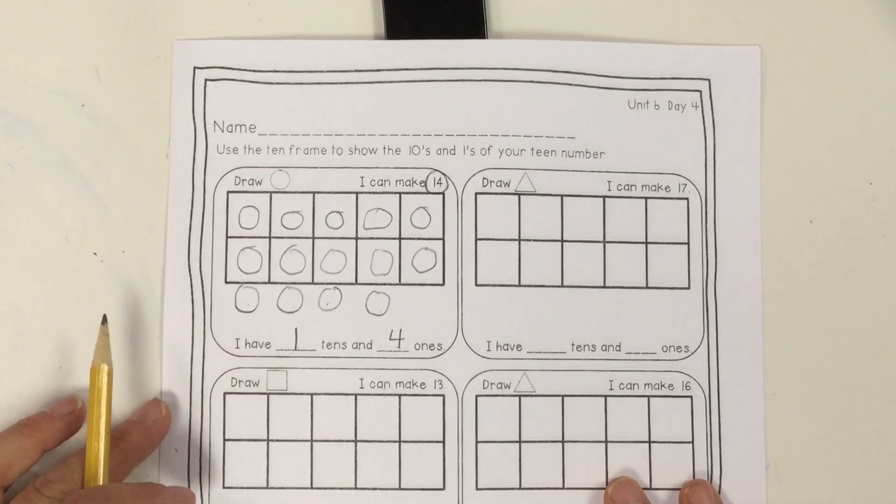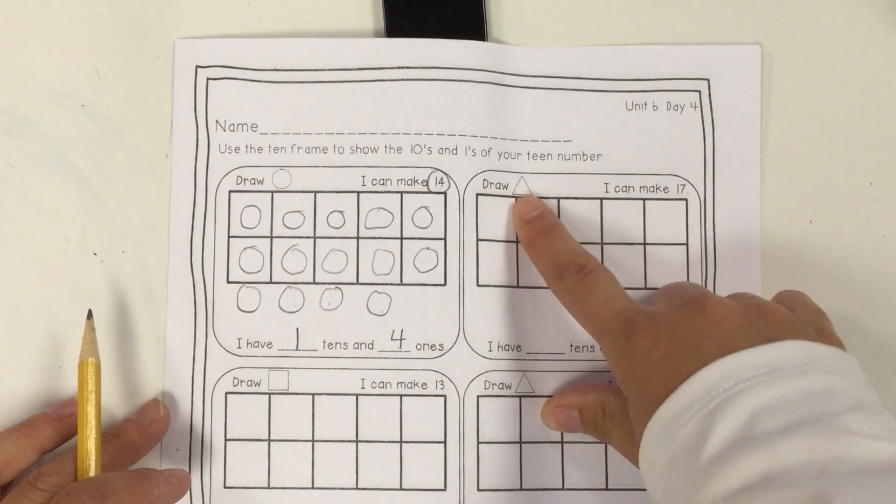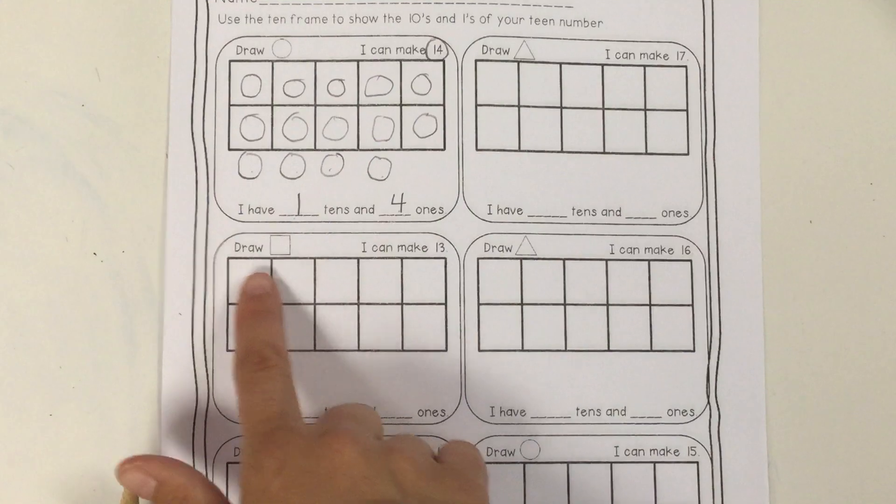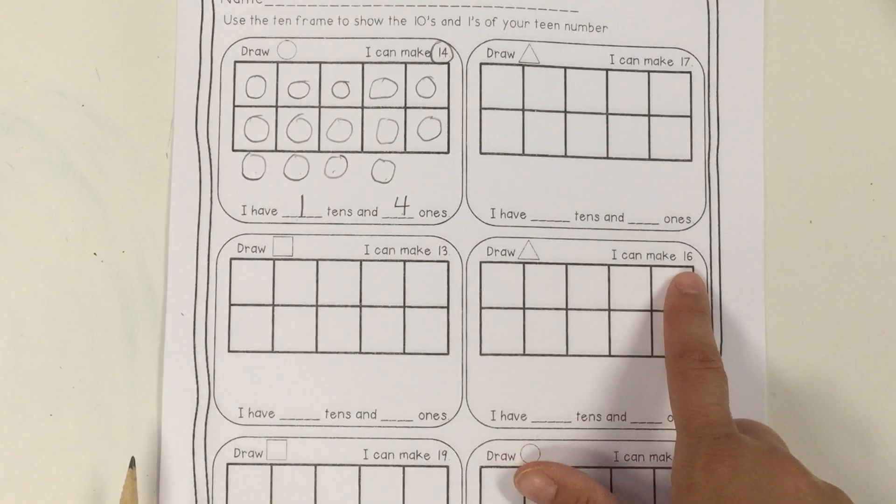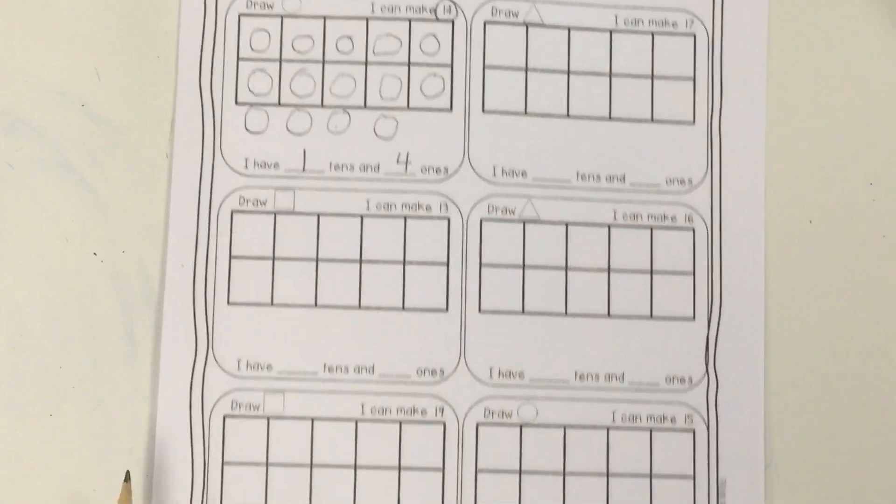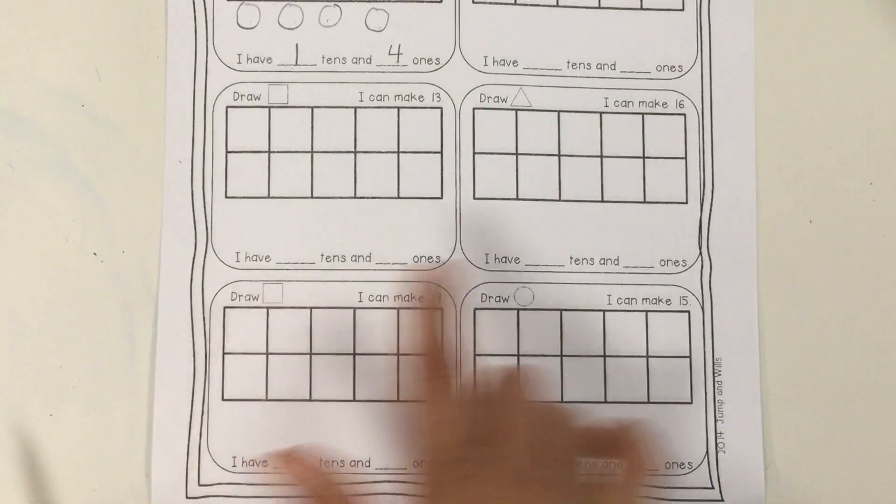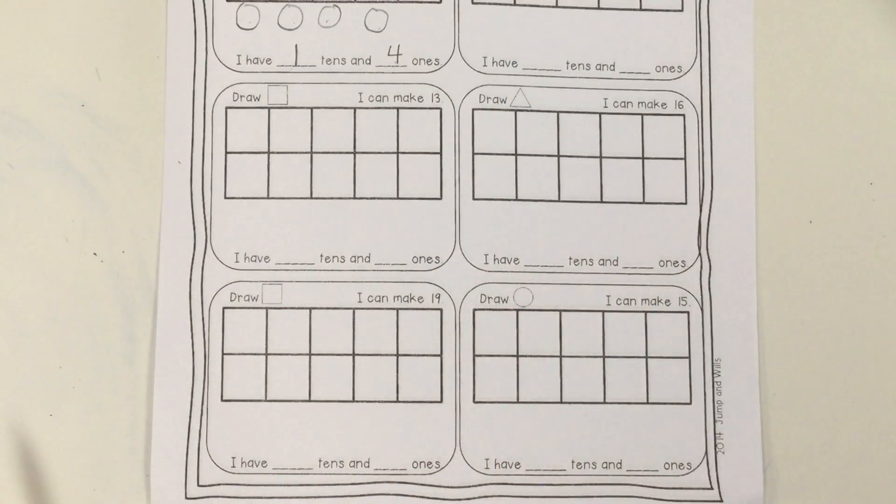And so you're going to do the rest of the worksheet. So here you're going to make 17, draw triangles. You're going to make 13 and draw squares. Draw 16 and draw triangles. Draw 19, draw squares. Make 15 and draw circles. That's it.